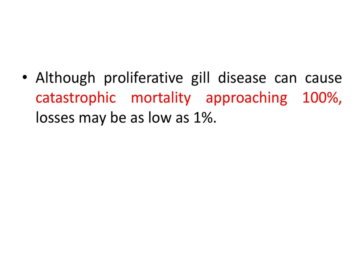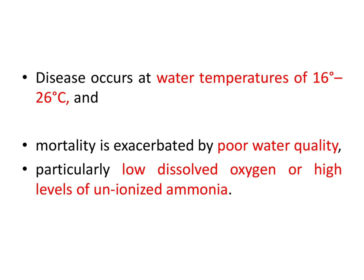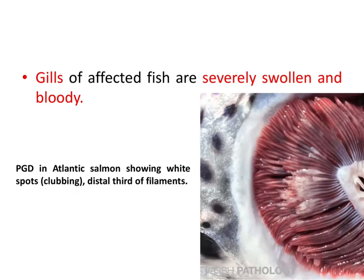Although proliferative gill disease can cause catastrophic mortality approaching 100%, losses may sometimes be as low as 1%. Disease occurs at water temperatures of 16 to 26 degrees Celsius, and mortality is exacerbated by poor water quality, particularly low dissolved oxygen or high levels of unionized ammonia. Gills of affected fish are severely swollen and bloody. This is a proliferative gill disease in Atlantic salmon showing white spots, clubbing, and distortion of the distal third of the filaments.